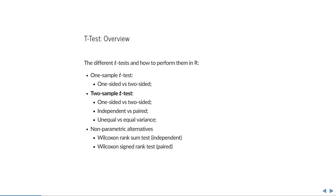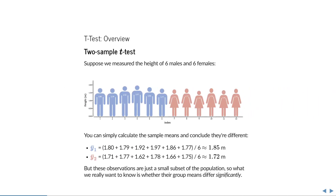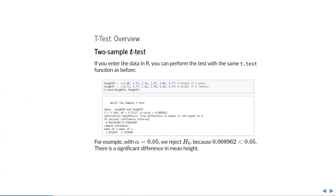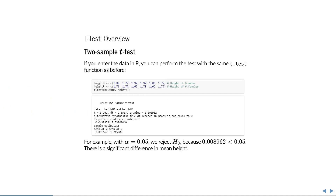Next, we'll discuss the two-sample t-test. In a two-sample t-test, we compare two sample means. Suppose we measured the height of six males and six females, and we want to know whether they're different. You can simply calculate their means — the males are 1.85 on average, and the females are 1.72 on average — but these are just a small subset of the population. What we really want to know is whether their group means differ significantly. In R, we need a vector of the male heights and a vector of the female heights, and then we use the t.test function again. This returns a p-value, and with alpha = 0.05, we would reject the null hypothesis because the p-value of about 0.009 is much lower than 0.05. So there is a significant difference in the mean height of men and women.